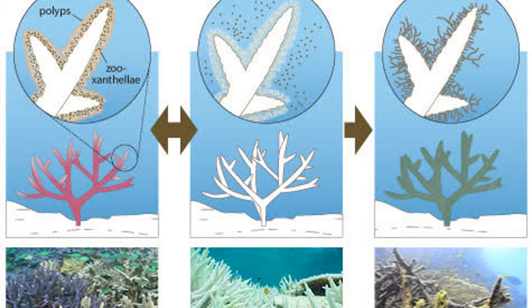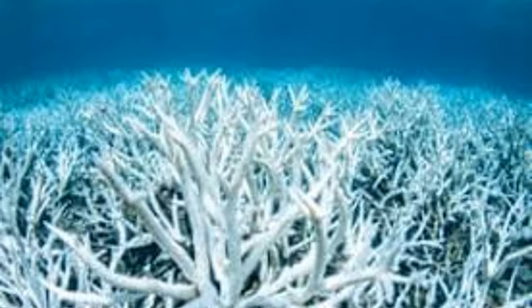Corals have a protective outer layer made out of algae cells called zooxanthellae. Zooxanthellae almost acts as a sweater on the coral. When the temperature gets even slightly warmer, the coral sheds the zooxanthellae.